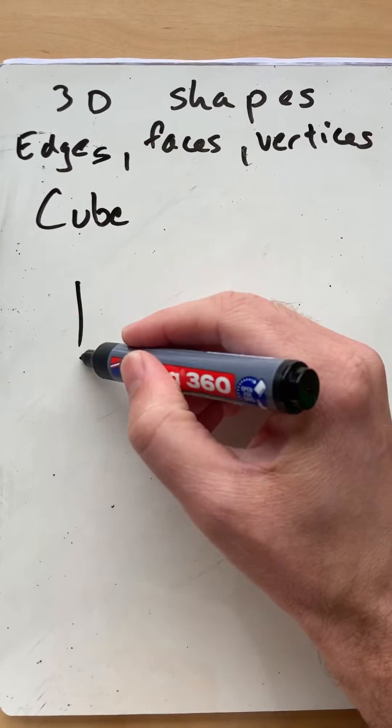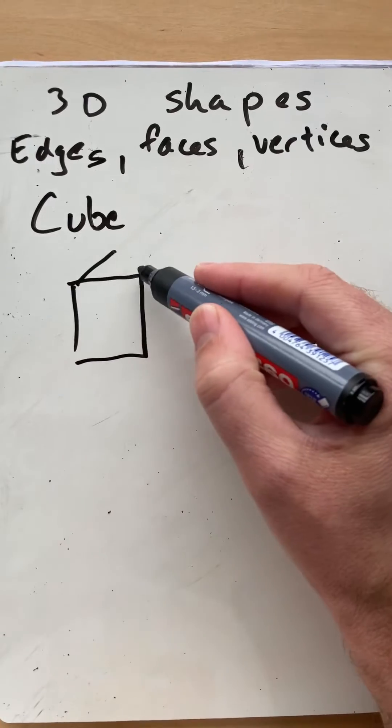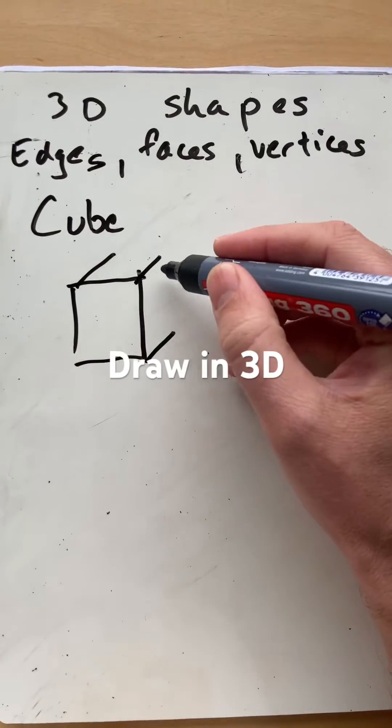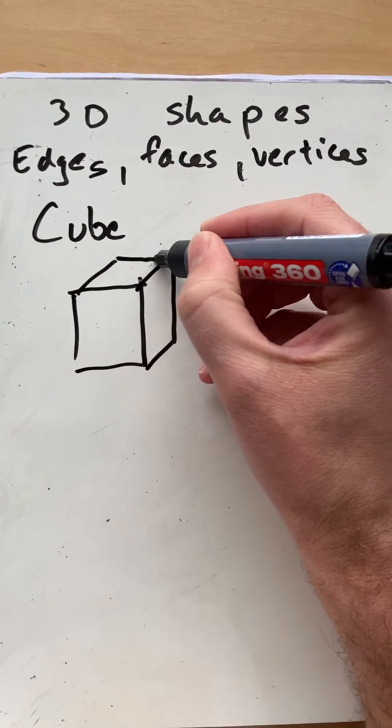So let's start by drawing that to draw in 3D. Start with a square, draw parallel lines all going off in the same direction, and then parallel lines to the original item.